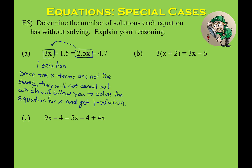For equation B: if I would distribute, I can see that I have 3x on both sides, so when I go to subtract those over they'll cancel out — so I'm definitely looking at a special case. Then I need to look at the constants: are they the same or different? If the same, that's infinitely many solutions; if different, that's no solution. On the left I have 6 and on the right I have negative 6 — those are not the same. So 3x plus 6 will never equal 3x minus 6, meaning this is no solution.